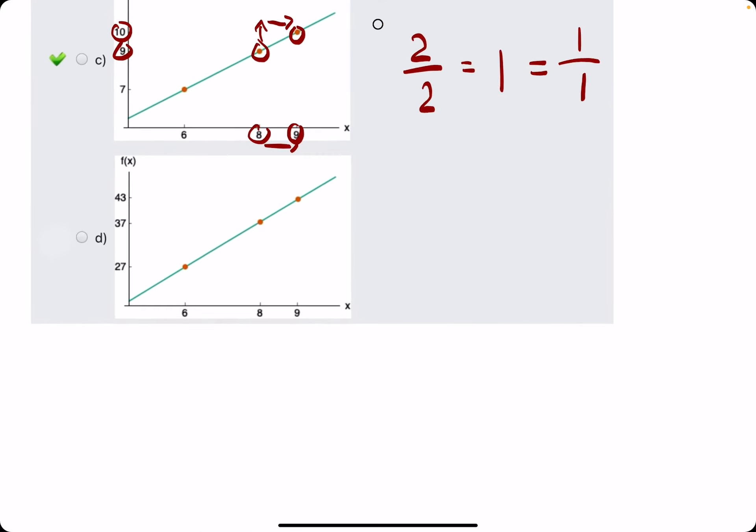And just for fun, I'll go ahead and do option D. Rise from 27 to 37 is 10. Run is 2. So we get 10 over 2, which is 5.